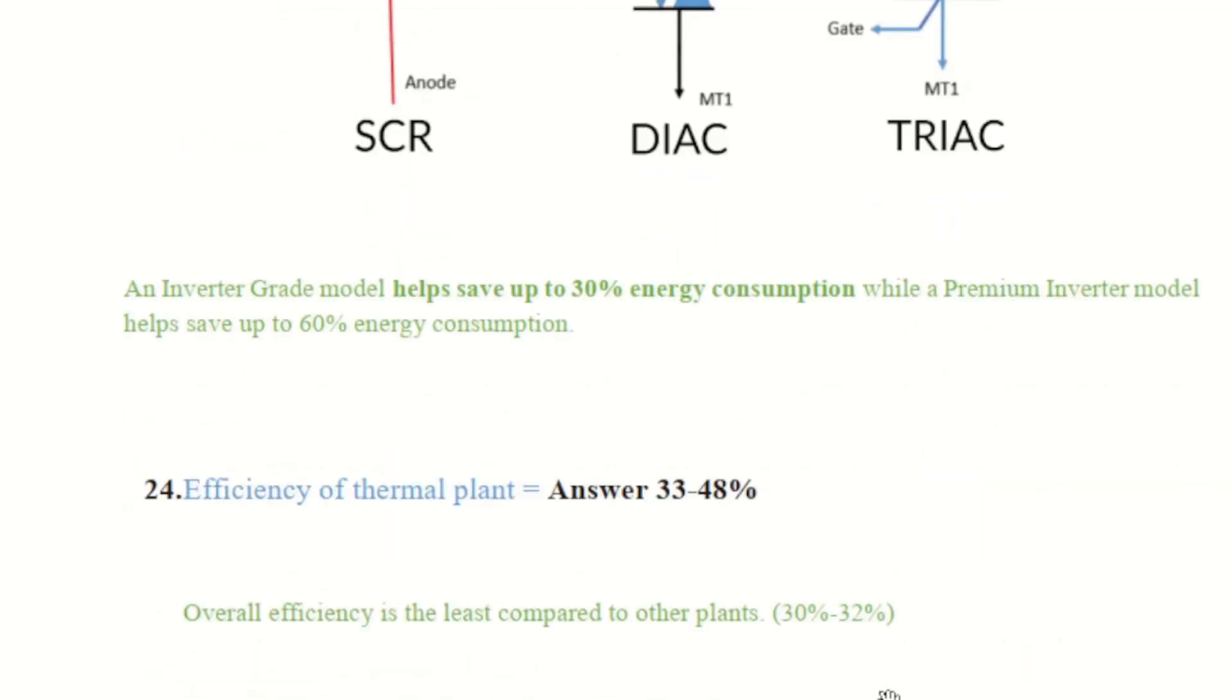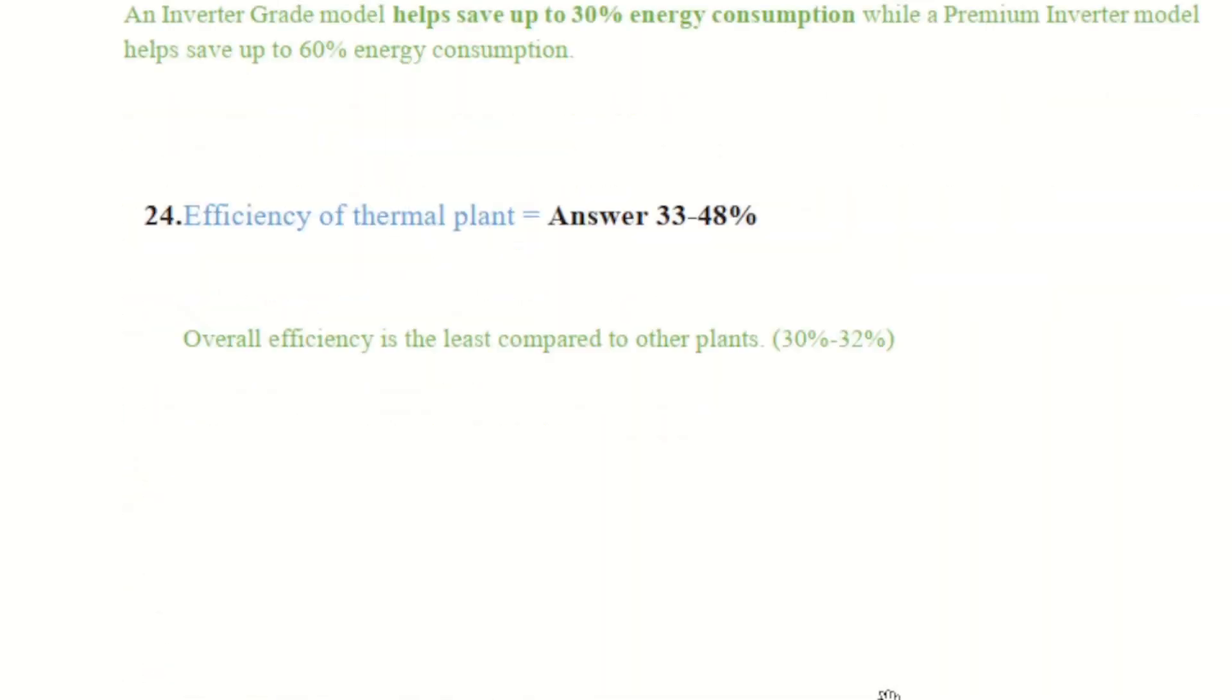Next question is asking about the efficiency of thermal plants. It is a constant value efficiency about 30 but it is here the options are 33 to 48%. Overall, the efficiency is the least compared to other plants.